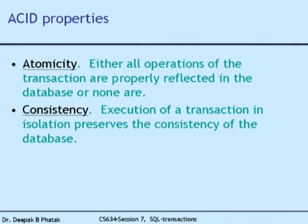The ACID properties are briefly defined as follows. Atomicity is the fundamental property: either all operations of the transaction are properly reflected in the database, or none are. If A minus 50 is reflected, B plus 50 must also be reflected — or A minus 50 should also not be reflected. This is called atomicity — the two operations either both execute or neither executes, forming an atomic unit.